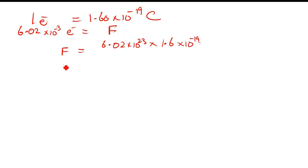1 electron is 1.6 × 10^-19 coulombs. So 6.02 × 10^23 times 1.6 × 10^-19 equals F. So F is equal to L times e, which we have derived from here.